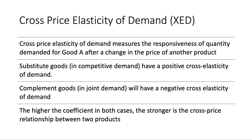Cross-price elasticity measures the responsiveness of the quantity demanded for good A, following a change in the price of another product. Substitute products — those are goods in competitive demand — will have a positive cross-price elasticity. Complementary goods, things that you buy together, are products in joint demand, and they typically will have a negative cross-price elasticity of demand. The sign of the coefficient of cross-elasticity will make a difference in this situation. The higher the coefficient, the stronger is the cross-price relationship between two products. Unrelated products will have a cross-price elasticity of demand of zero.